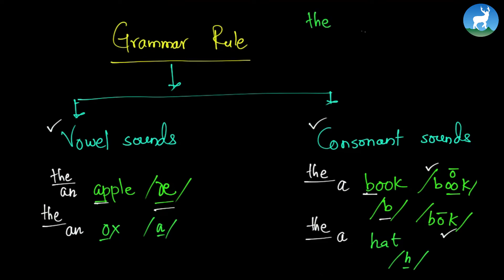The article 'the' can be pronounced either as 'thuh' or 'thee.' If it is followed by a consonant sound, it is pronounced 'thuh' — like the pot, the mat, the ticket. If it is followed by a vowel sound, it is pronounced 'thee' — like the axe, the ox, the umbrella. Similarly, 'a' is followed by a consonant-sounding word, while 'an' is followed by a vowel-sounding word. This is the basic grammar rule.